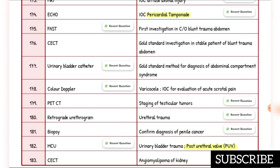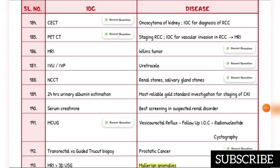Investigation of choice for urethral trauma is retrograde urethrogram. Confirmed diagnosis of penile cancer is biopsy. Urinary bladder trauma post-void: MCU. Investigation of choice for oncocytoma of kidney is CECT. Investigation of choice for diagnosis of renal cell carcinoma is CECT.